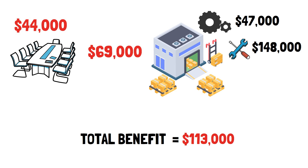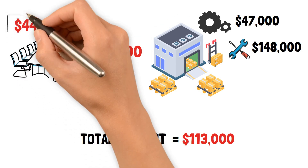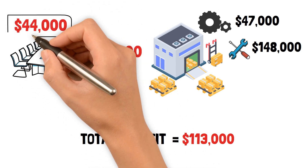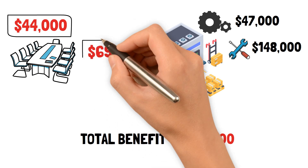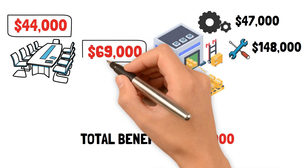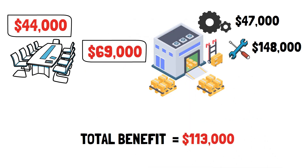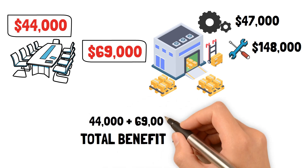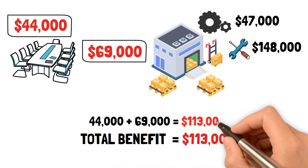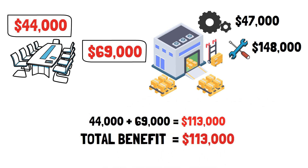The total benefit to the company in the first year is $113,000. The benefit equals the anticipated reduction in staff, $44,000, plus the anticipated reduction in inventory, $69,000: $44,000 plus $69,000 equals a total benefit of $113,000.